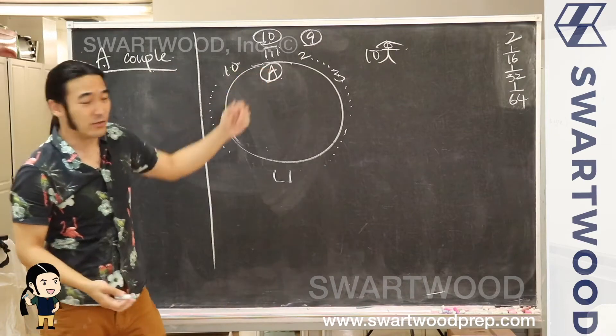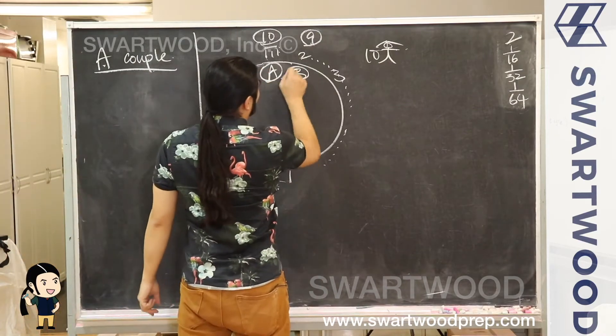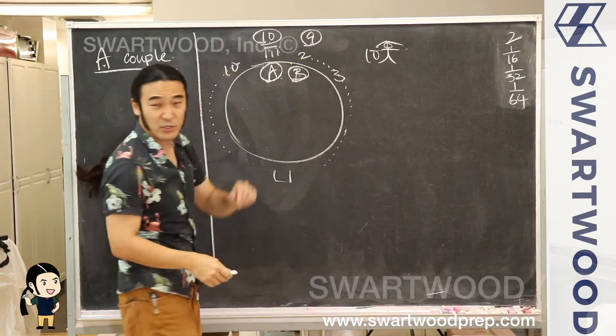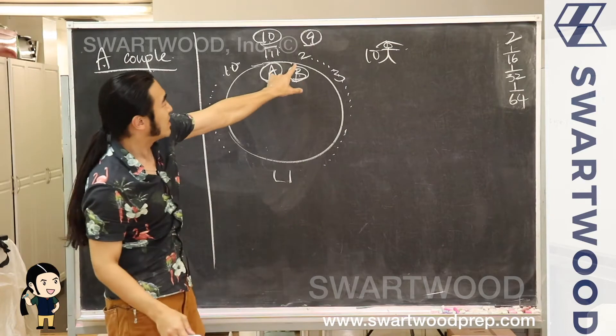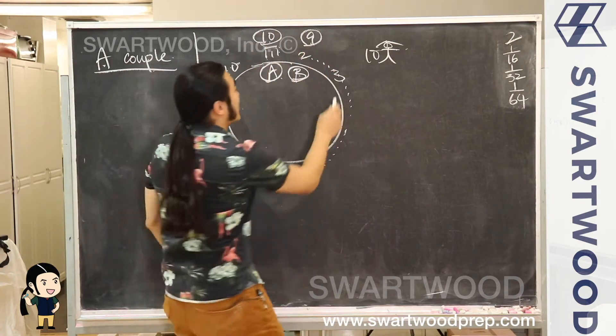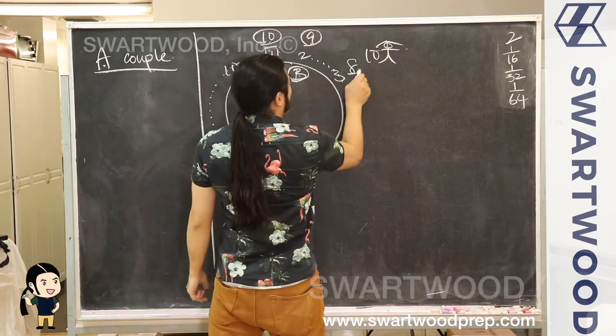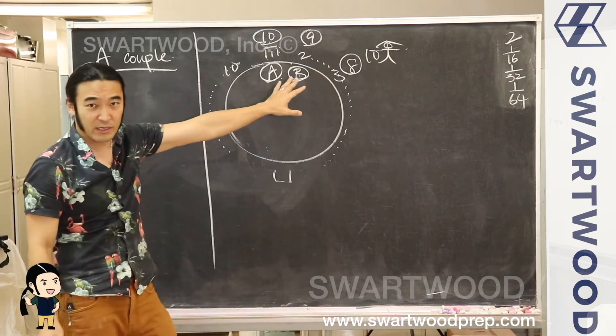Let's put someone down here — say B. B sits down in seat number two. Once A and B have seated themselves, you don't have ten people anymore, you don't even have nine. Now you have eight, so there are eight choices for seat number three.